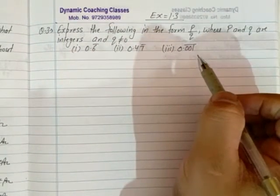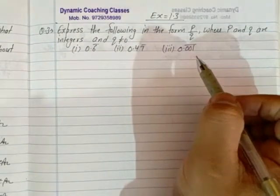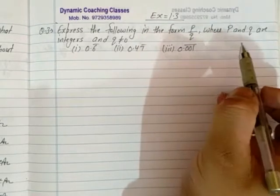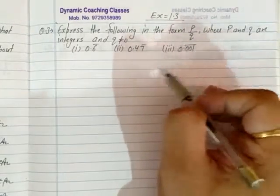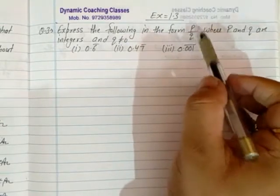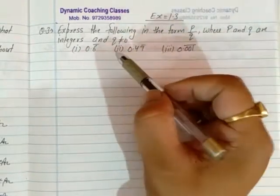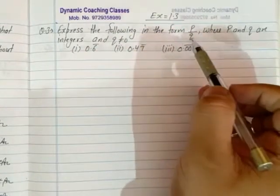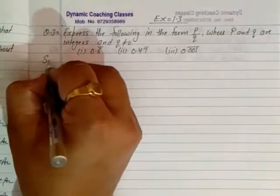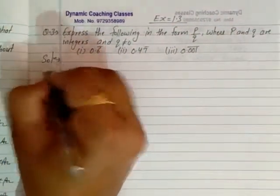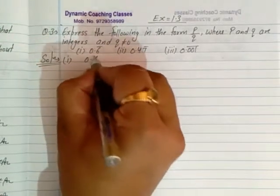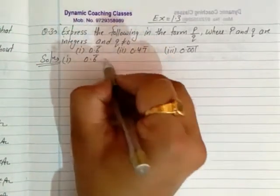In question number 1, p by q was given and you had to write it in decimal form. This is the opposite — here you have to convert the decimal into p by q form. Let's see the solution. First of all, let's look at the first part. We have 0.6 bar.